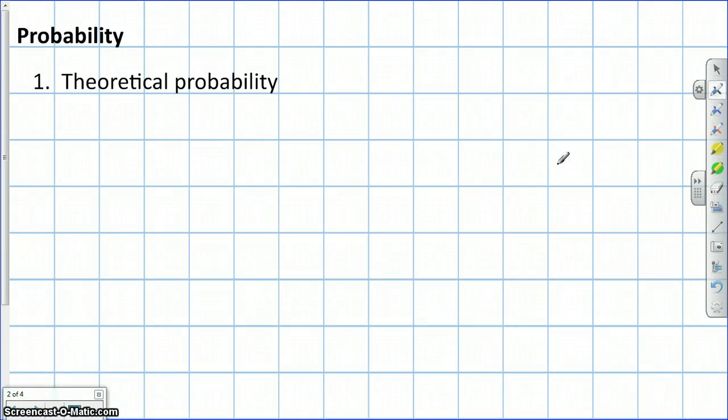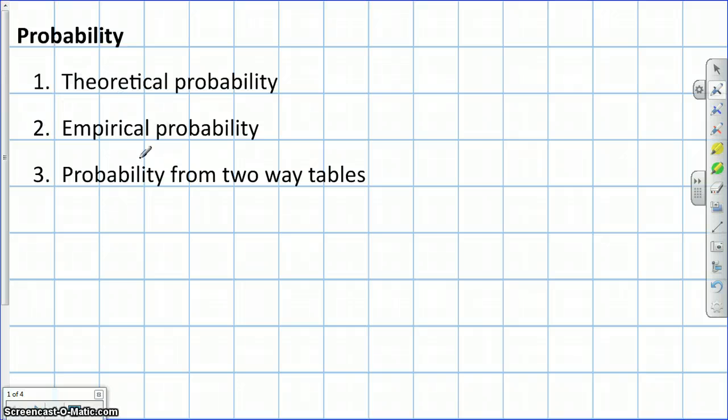Hello there. We're going to look at probability, and we're going to look at three parts of probability. We're going to look at theoretical probability first, then empirical probability, and then probability from two-way tables.